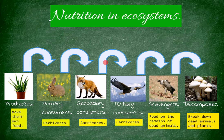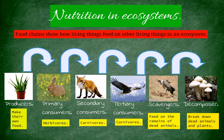All these living things make up a food chain. Food chains show how living things feed on other living things in an ecosystem. As you can see, arrows in a food chain always point from the food to the consumer.